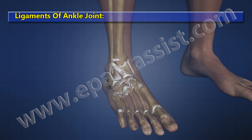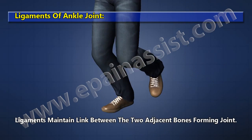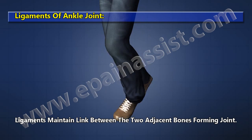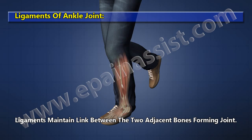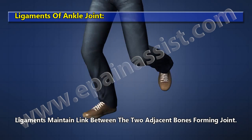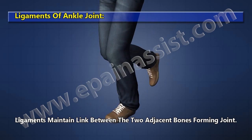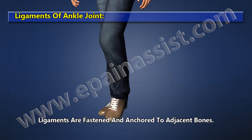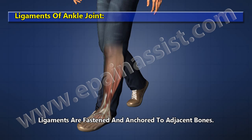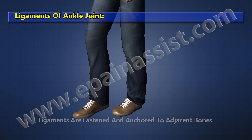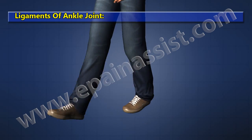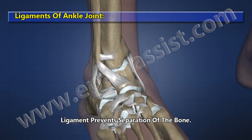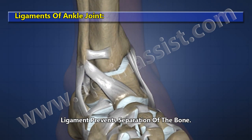Ligaments act on the ankle joint. Ligaments maintain the link between two adjacent bones forming a joint. The ligaments are fastened and anchored to adjacent bones, and ligaments prevent separation of the bone.